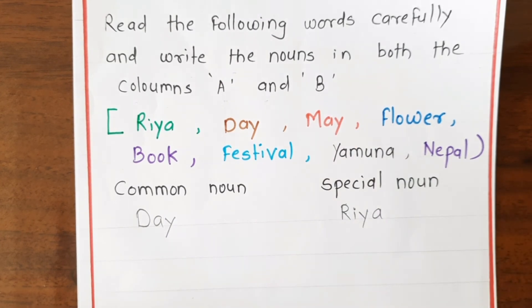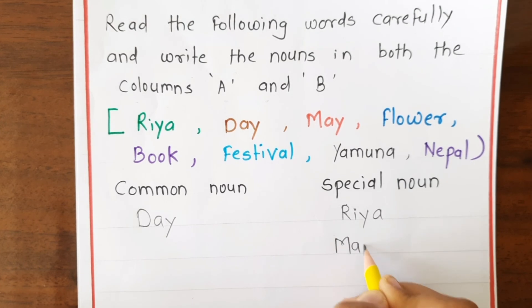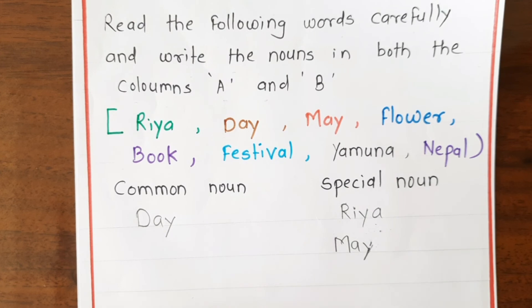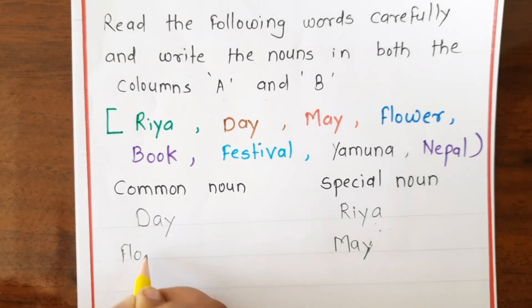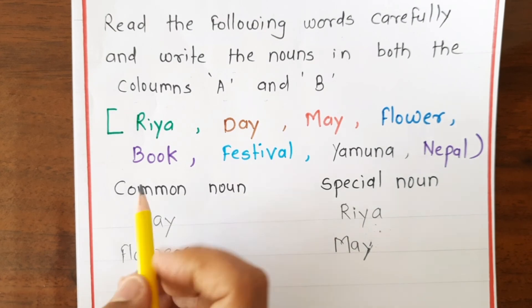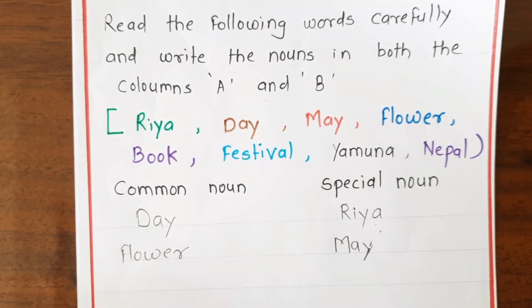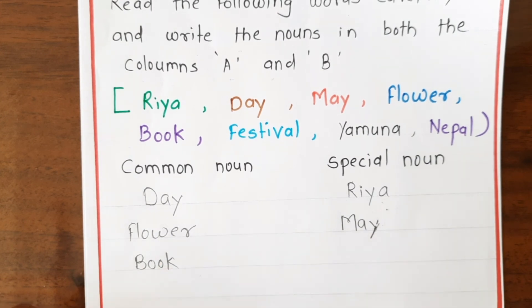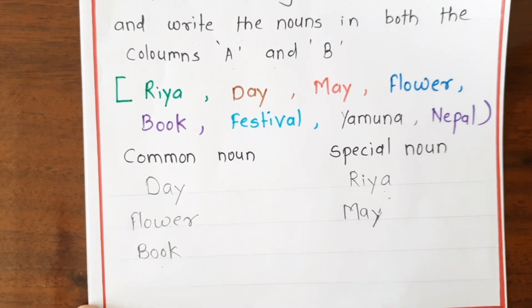Next, 'May' — May is a particular month's name, so it is a proper noun. Next, 'flower' — flower does not refer to a specific flower, so it is a common noun. Next, 'book' — book is a general word; if no particular book is named, it is a common noun.